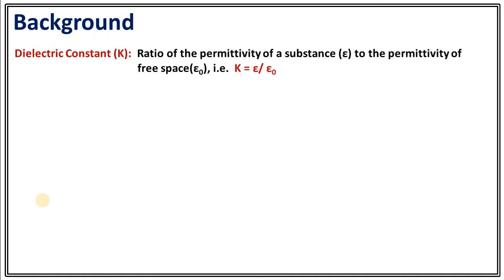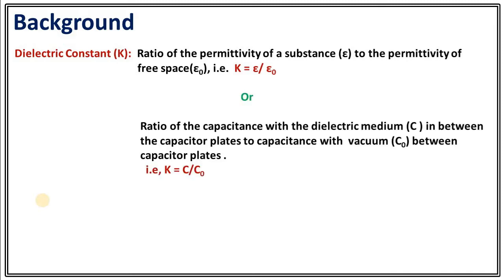What is dielectric constant? Dielectric constant is the ratio of permittivity of a substance to the permittivity of free space. If you denote the dielectric constant by k, permittivity of substance by epsilon, and permittivity of free space by epsilon naught, then k equals epsilon divided by epsilon naught. You can also define dielectric constant in terms of capacitance.